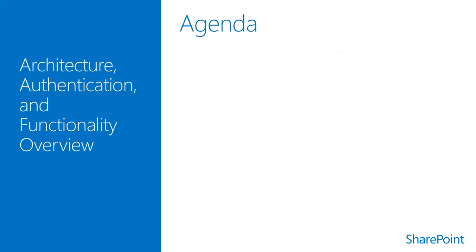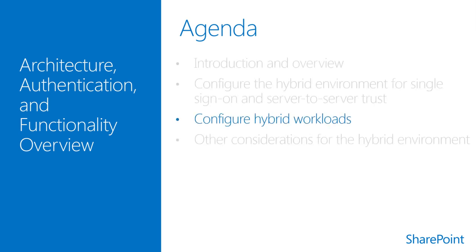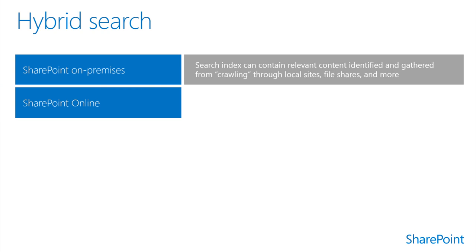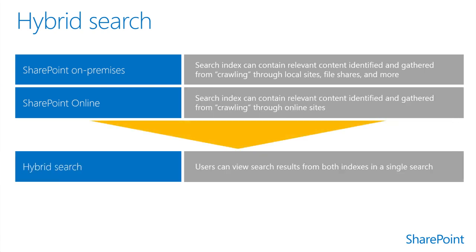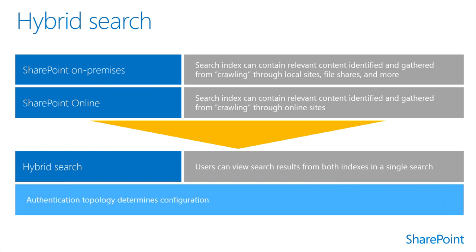This section provides an overview of hybrid workload considerations with Office 365 and SharePoint 2013. A hybrid SharePoint search environment allows users to get search results in SharePoint Server 2013 or SharePoint Online from both the SharePoint Server 2013 and SharePoint Online Search Indexes. The SharePoint 2013 Search Index can contain crawled content from local SharePoint Server sites, file shares, and other resources, while the SharePoint Online Search Index can contain crawled content only from SharePoint Online sites. Hybrid Search enables end users to get and view search results from both indexes by performing a single search.